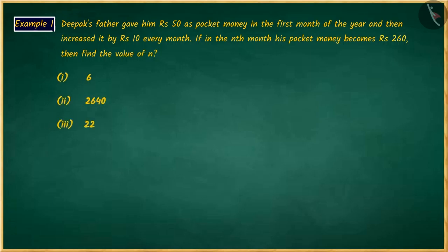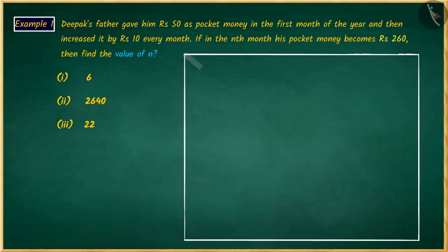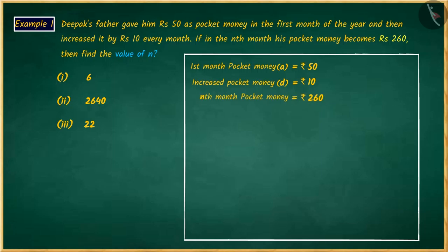Pause the video to solve the question and then match your answer. You can see that here we have to find the nth month. From this example, we see that every month, pocket money is increasing by rupees 10, forming a pattern with which we can obtain an AP.